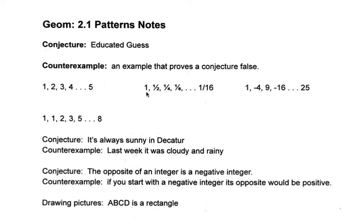Our next pattern says 1, 1 half, 1 quarter, 1 eighth. They always have 1's on top. We have a 2 on the bottom, a 4 on the bottom, an 8 on the bottom — we're doubling the denominator. Therefore, we would come up with a conjecture of 1 over 16 for that one.